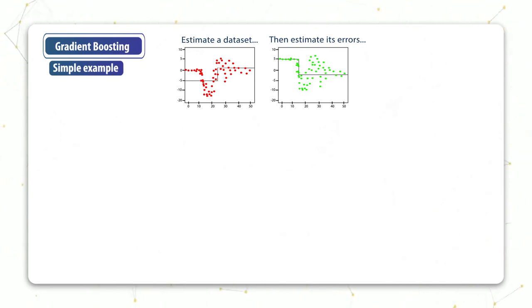Now this model is obviously too simple to fit the data and so it makes many mistakes. So what we do next is we compute the error of the model and we see on the right hand side the residuals plotted.